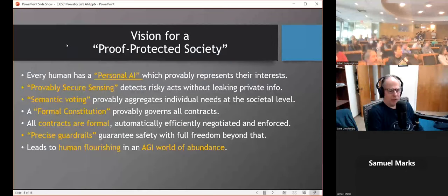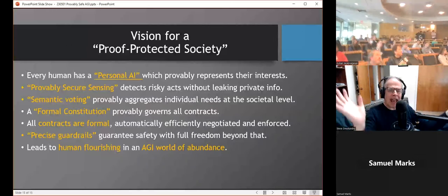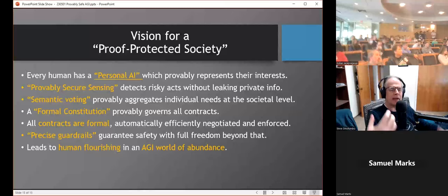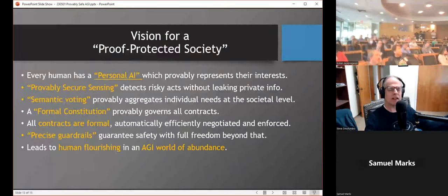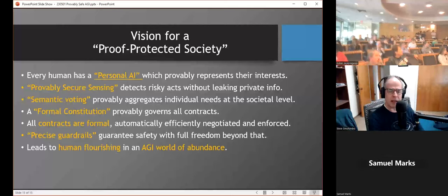And where do we end up if we build a society like that? The vision I have, kind of a sketch here, is that every human would have a personal AI which provably represents their interests. We have provably secure sensing which detects all risky acts and yet does not leak any private information that does not involve a risky act. We have semantic voting which provably aggregates every individual's needs at the societal level. We have a formal constitution which provably governs all contracts. All contracts are formal, automatically and efficiently negotiated and enforced. And we have precise guardrails that guarantee safety with full freedom beyond that. And this leads, hopefully, to human flourishing in an AGI world of abundance.